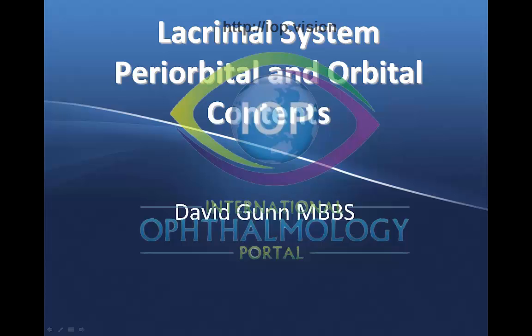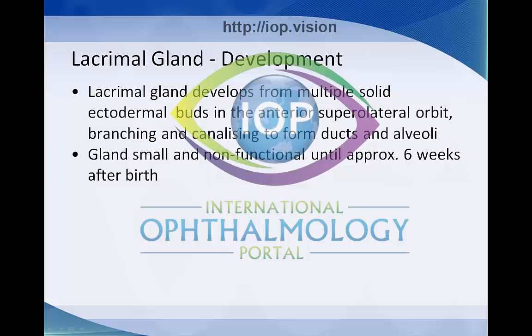The development of the lacrimal gland. The lacrimal gland develops from multiple solid extramural buds in the anterior and superolateral orbit. It's branching and canalising to form ducts and alveoli. The gland is small and non-functional until approximately six weeks after birth.